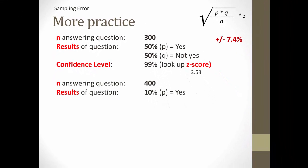Here's another one. Now we have 400 answering the survey, where the question results are 10% who said yes, or P. So, of course, you can calculate Q at 90%, and the confidence level we're assuming here is at 90%. You look up the Z-score, and it's 1.65. Plug it all into the formula, and you get plus or minus 2.5%.